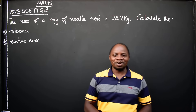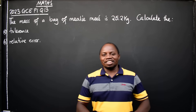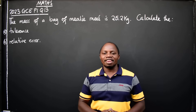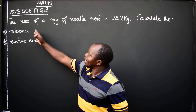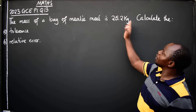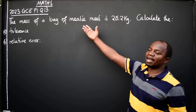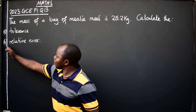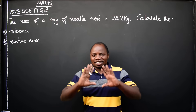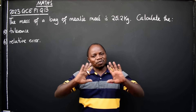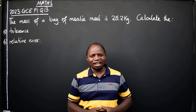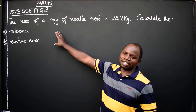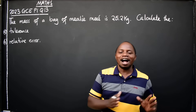Hello ladies and gentlemen, welcome. This is mathematics, and in this video we want to look at the 2023 GCE Paper 1 Question number 13. The question reads: the mass of a bag of millet is 25.2 kg. The question asks us to calculate two things: first, tolerance; and second, relative error. Let's identify the topic — we are talking about approximations.